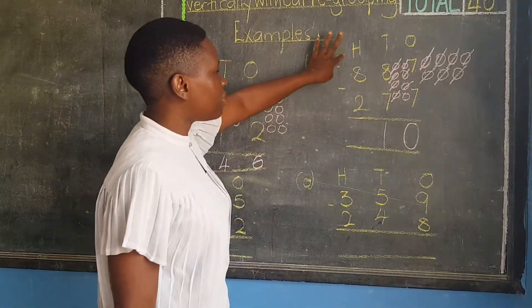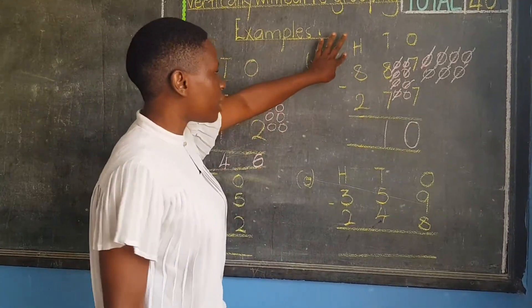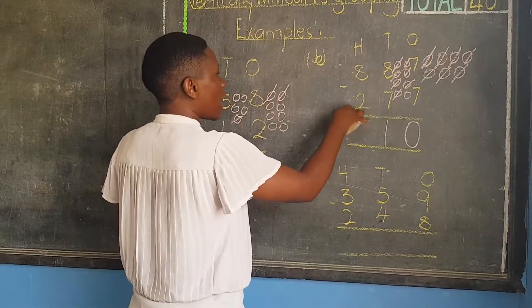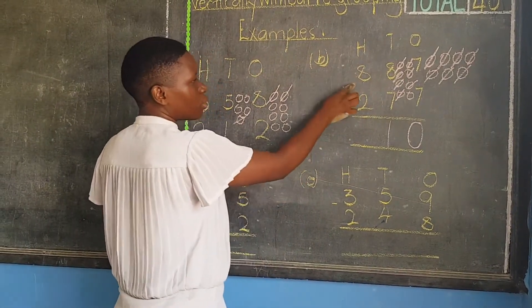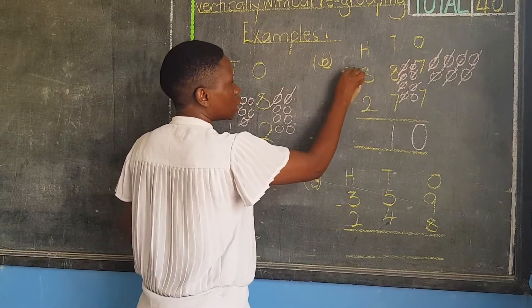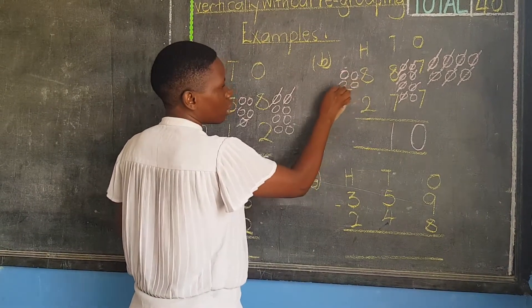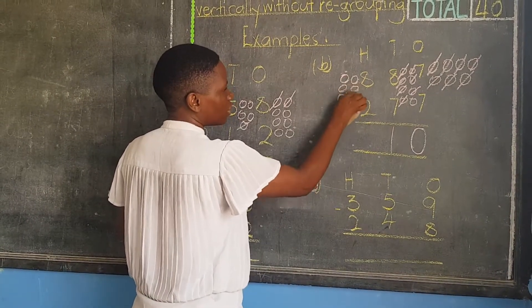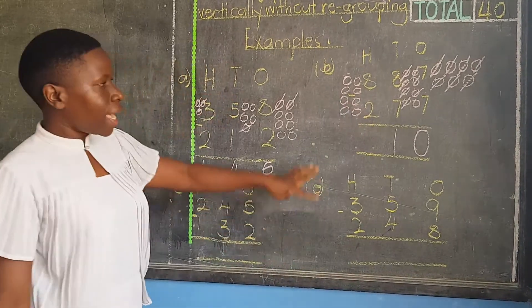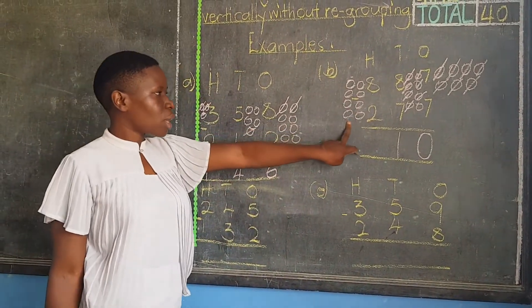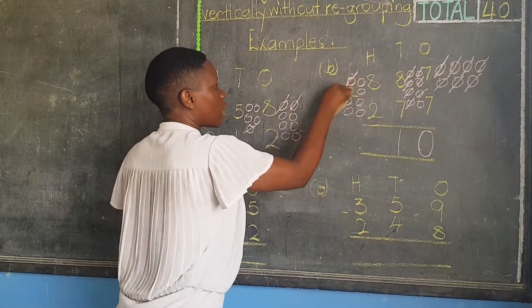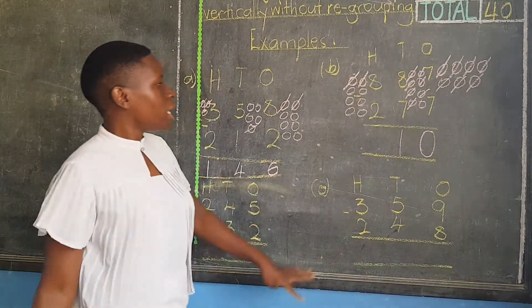I move on to the last place, which is hundreds. I say eight, take away two. I am supposed to draw eight balls — one through eight. Out of the eight balls, I am supposed to cancel how many? Two. We count one, two. After canceling, you will count the remaining balls to get the correct answer.